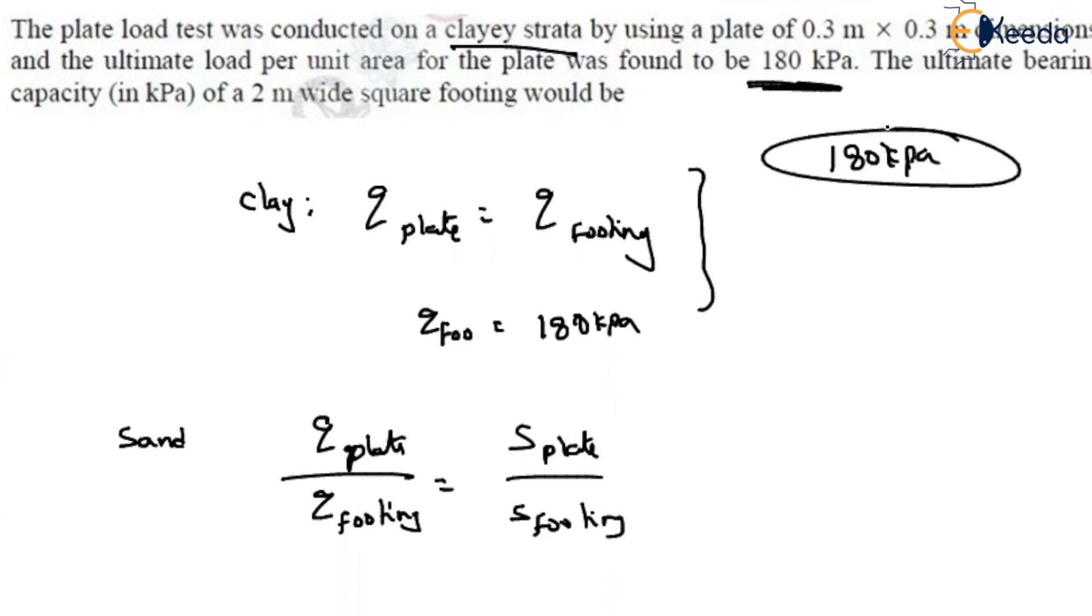If it is a sand, that bearing capacity is related to the settlement values. That means your k value on settlement, those are directly proportional. Then if it is a sand, use this relation. Then you will get the correct option, and also they will give you the settlement values also, right? Thank you.